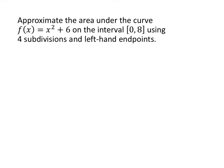The first thing we need to figure out is the quantity we call delta x. Delta x is always going to be b minus a divided by n. They give us the interval from 0 to 8, so a is 0 and b is 8. n is the number of subdivisions, which is 4. So we've got 8 minus 0 divided by 4, which is 2.